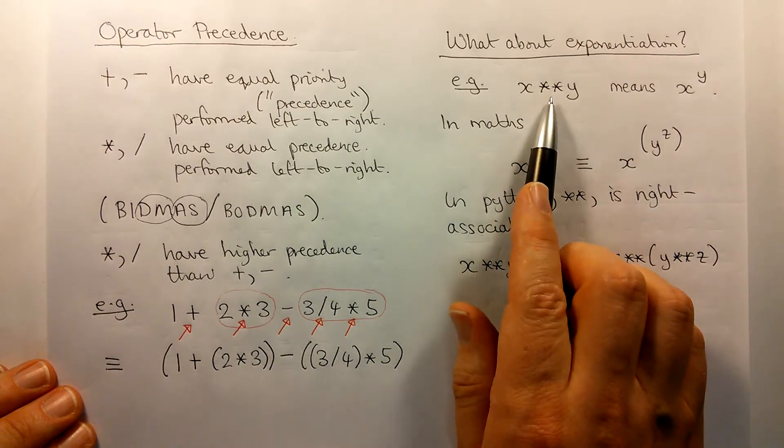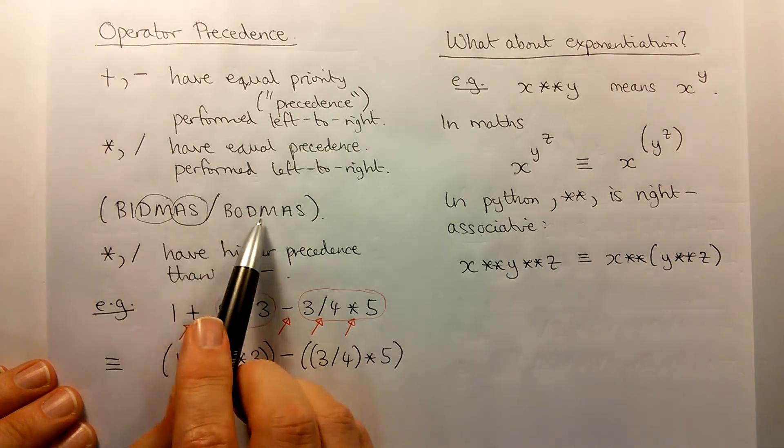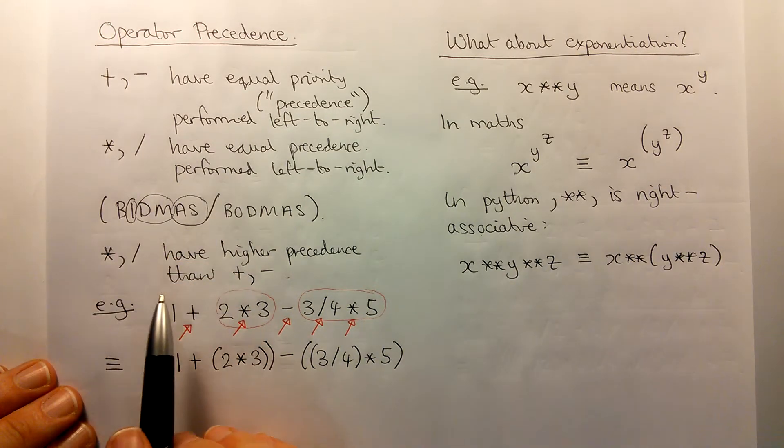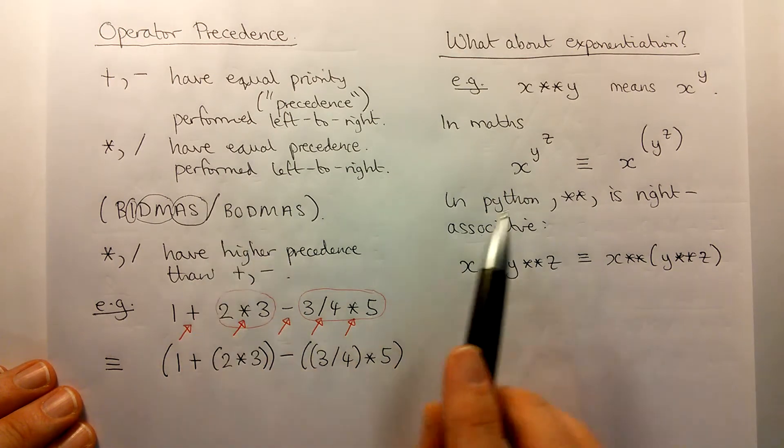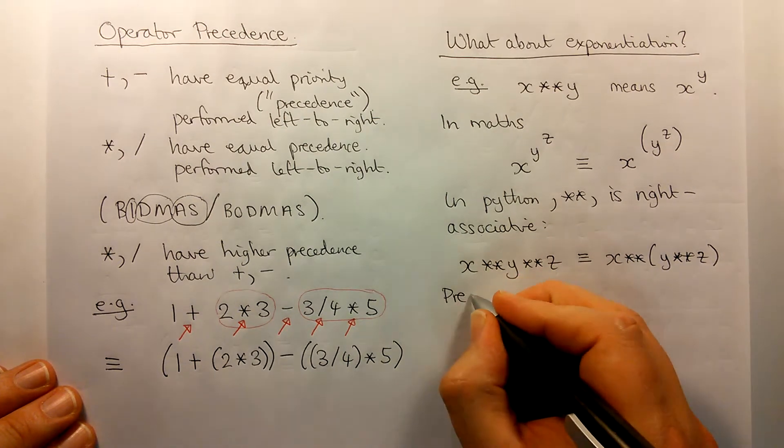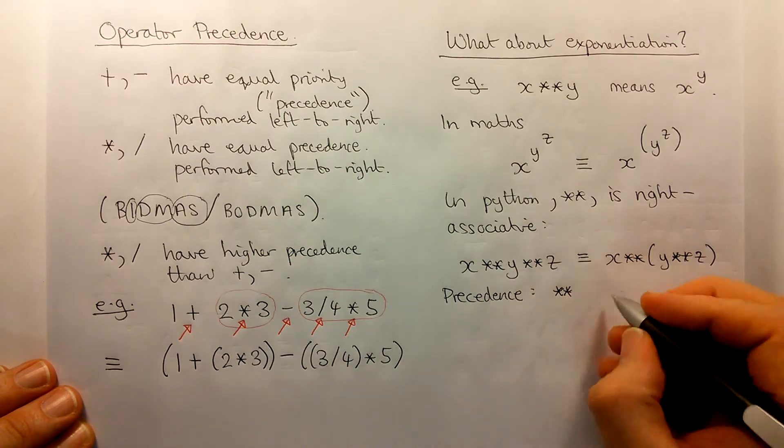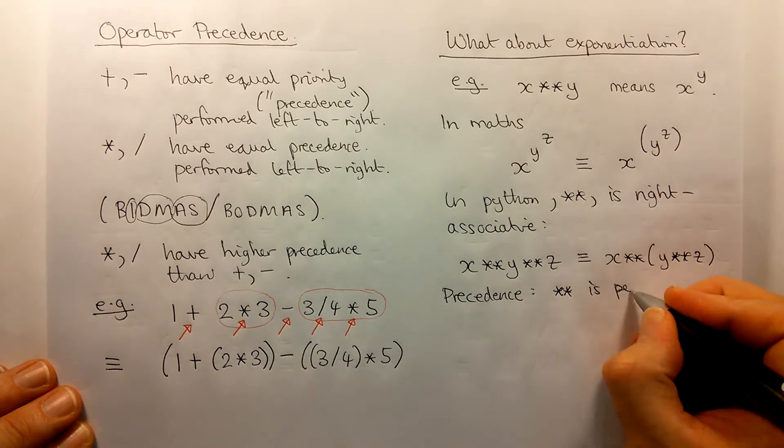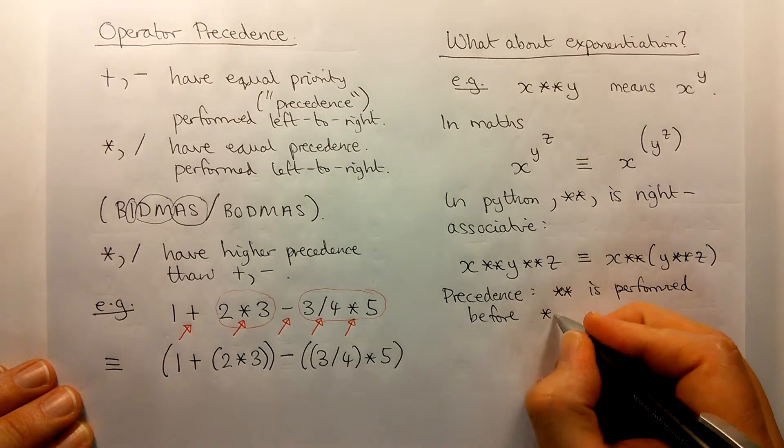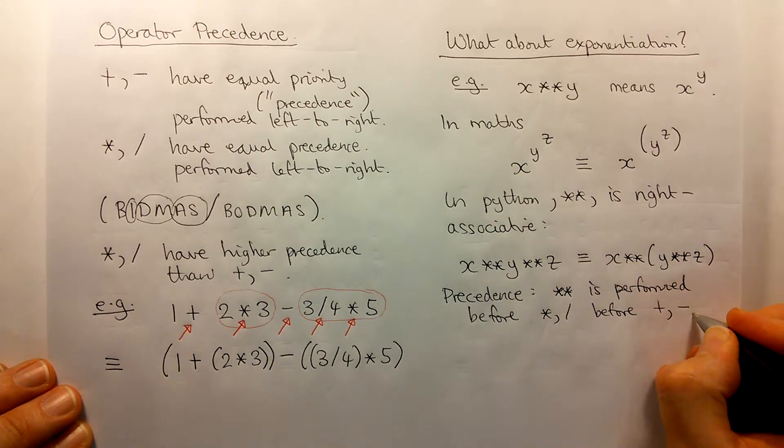Now, we know now that exponentiation is right associative, but where does it fit in with all of these other operations? Well, in the acronym BIDMAS or BODMAS, the I at the beginning stands for indices, or the O stands for order, and these mean exponentiation. So this should be performed first. So in terms of precedence, star star is performed before multiply divide, which is in turn before add subtract.